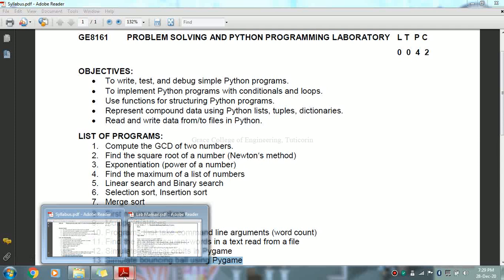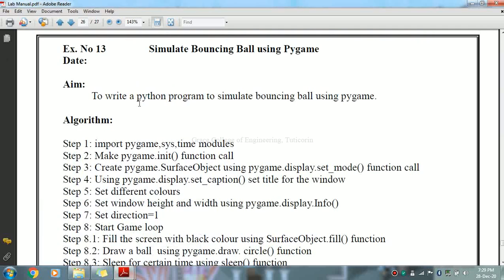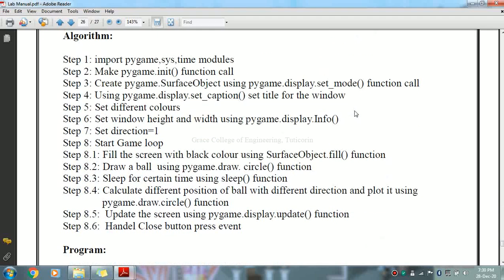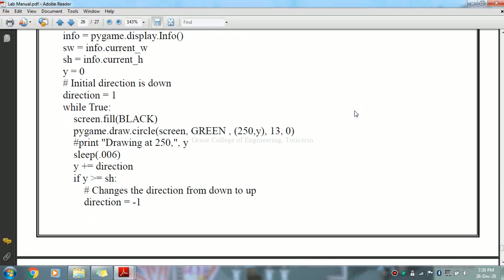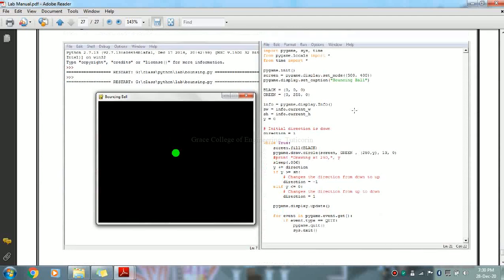Bouncing ball using Pygame is how to write a Python program to simulate bouncing ball using Pygame. It is an algorithm that can be used then program and that is one of the output. So, it is a ball bouncing up and down.